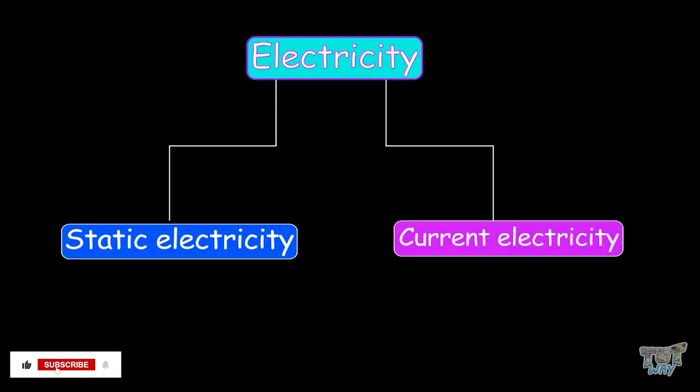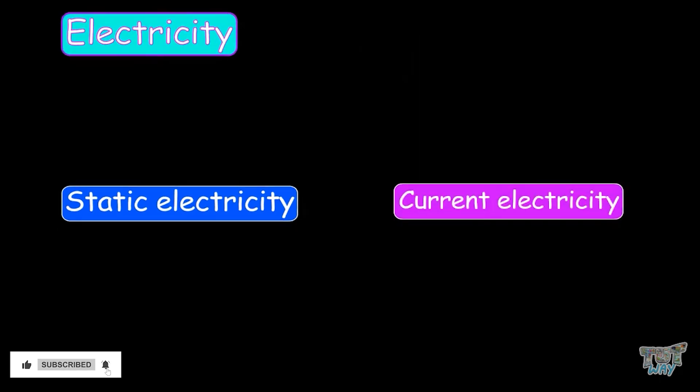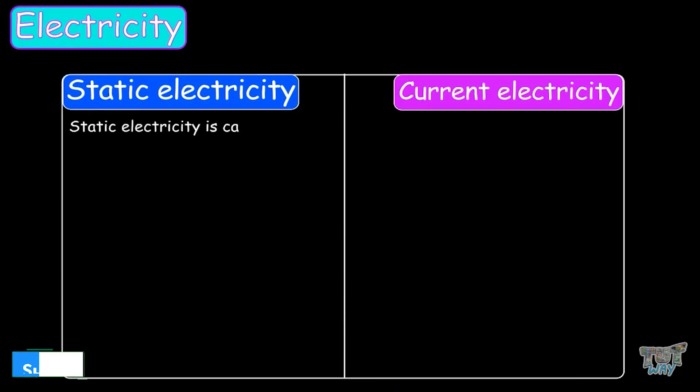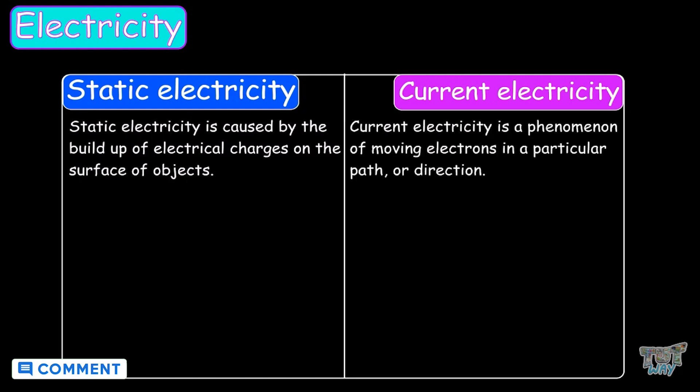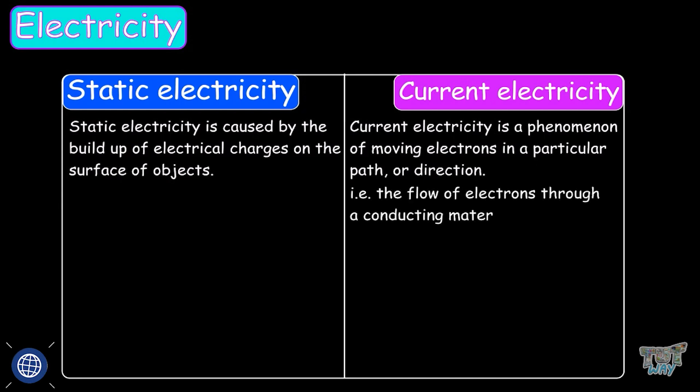Now let's contrast these two types of electricity. Static electricity is produced by the build-up of electrical charges on the surface of objects. And current electricity is a phenomenon of moving electrons in a particular path or direction, that is, the flow of electrons through a conducting material.